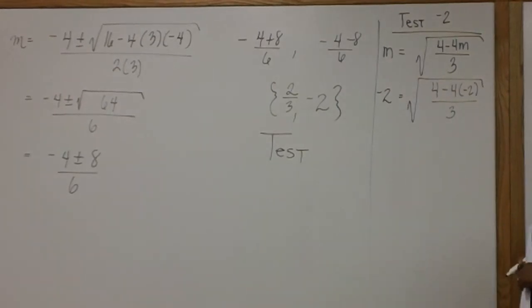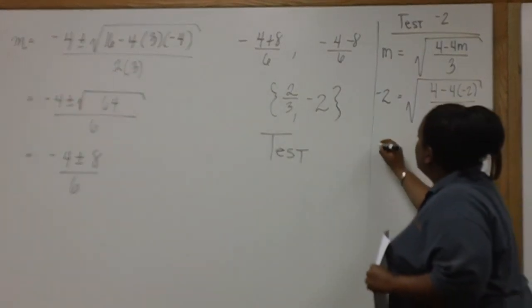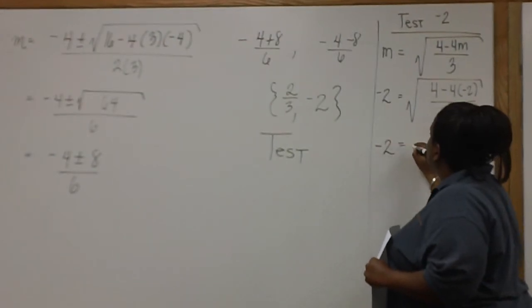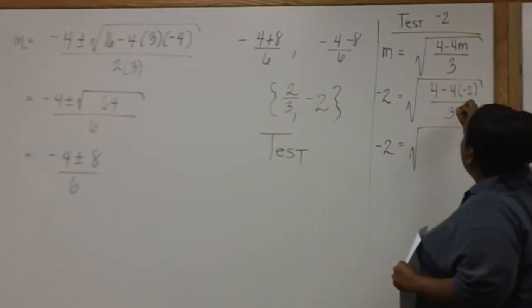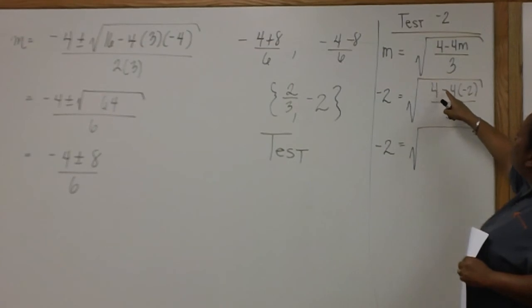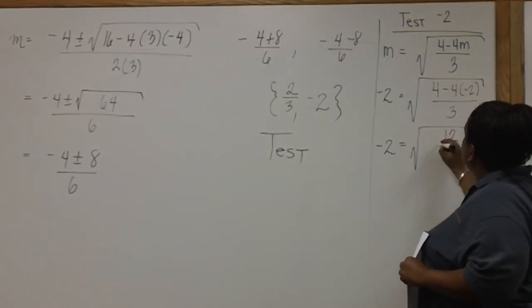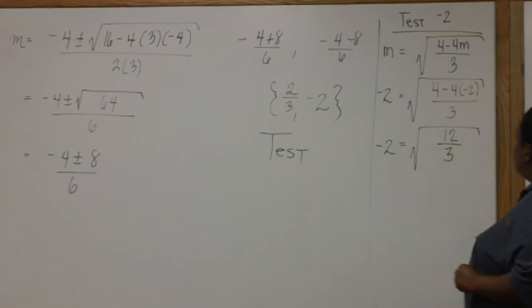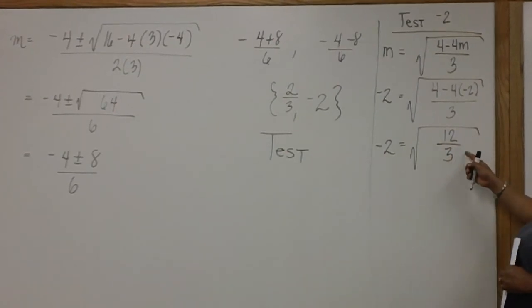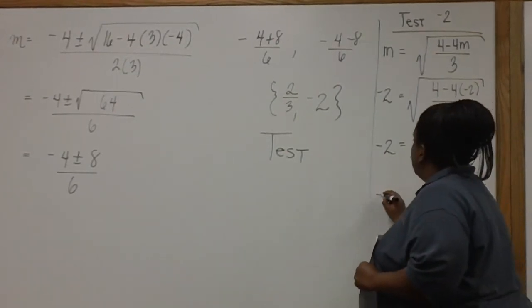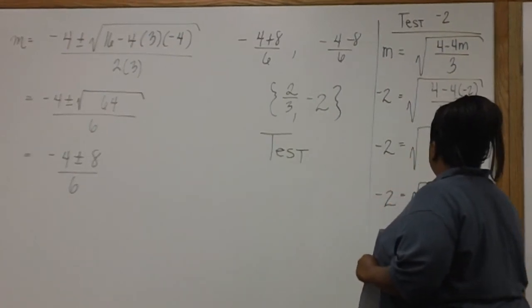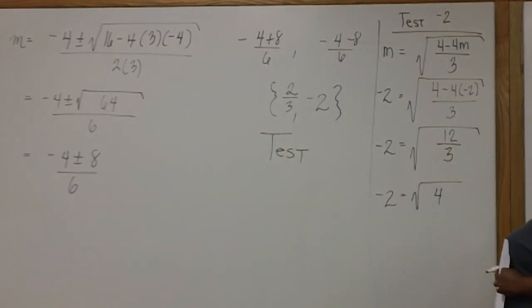Be careful under the radical and take your time. In the numerator, we'll end up with 4 plus 8, which is 12. And 12 divided by 3 is 4. And the square root of 4 is 2.